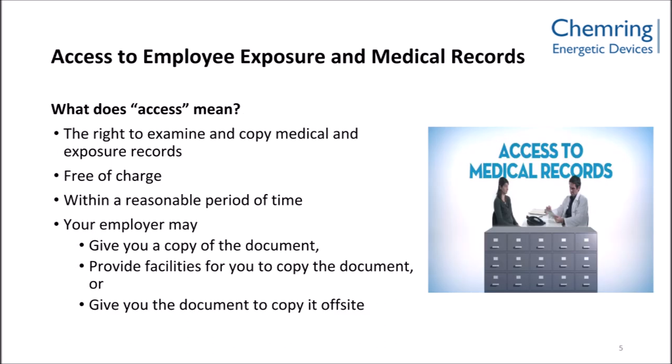An employer must authorize employees and, in other circumstances, their designated representatives to access exposure and medical records relevant to the employee, which, according to OSHA.gov, must be free of charge and within a reasonable period of time. Furthermore, employees or representatives may have access to these records in various ways, such as being given a physical copy of the document, provided the proper resources to copy the document, or given the document to copy off-site.